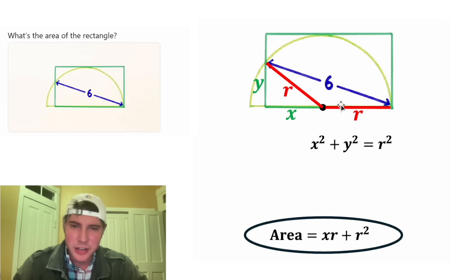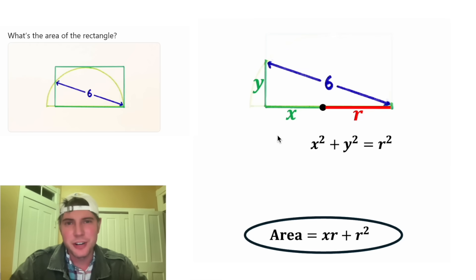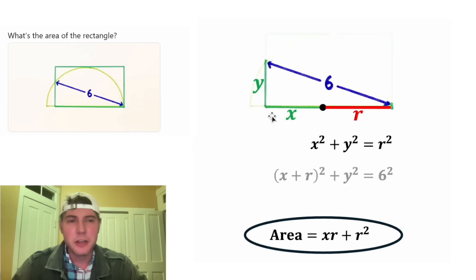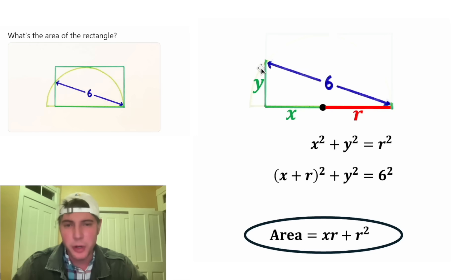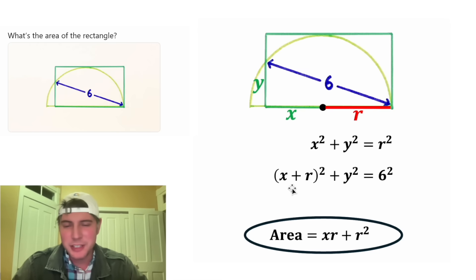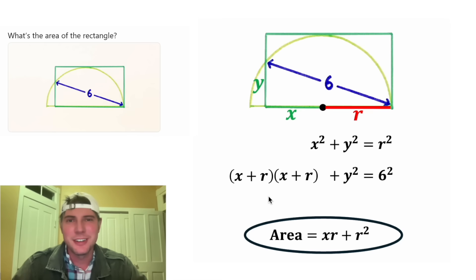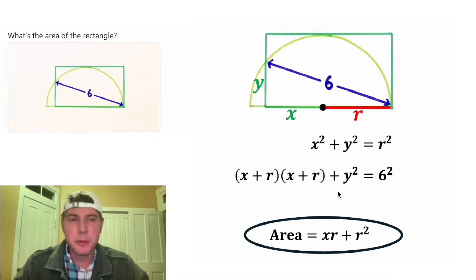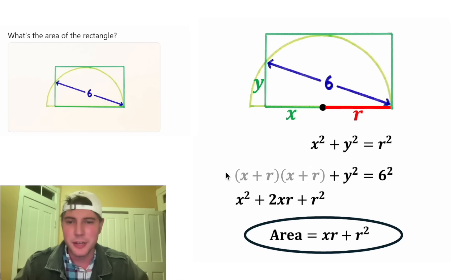And then I see another right triangle. Let's focus on this one and do the Pythagorean Theorem again. It'll be the quantity (X plus R) squared plus Y squared equals 6 squared. Now, (X plus R) squared is the same as (X plus R)(X plus R), which after multiplying out gives X squared plus 2XR plus R squared.